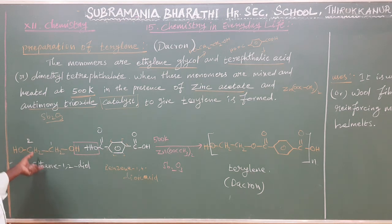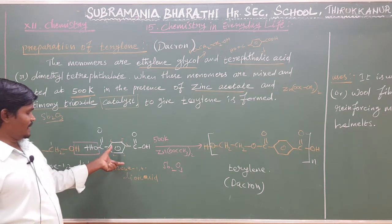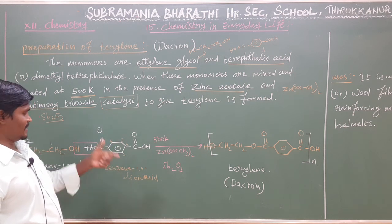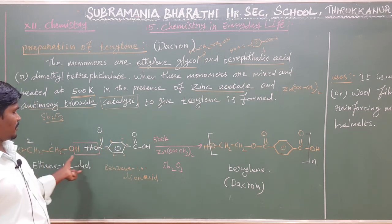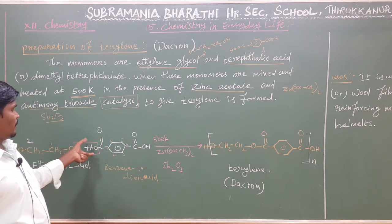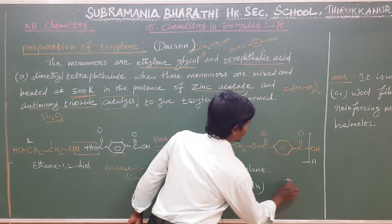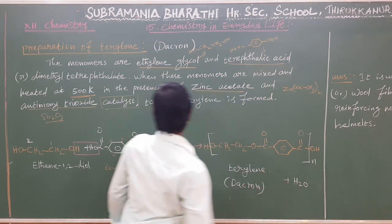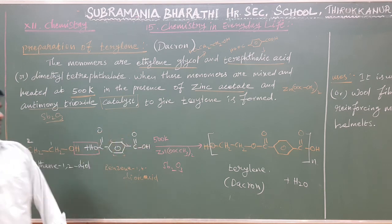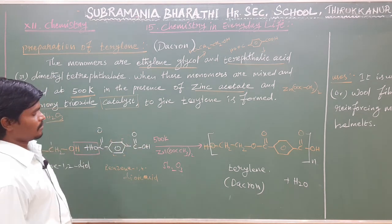Let us recap: we take ethylene glycol and terephthalic acid. The OH groups react and water is eliminated. The condensation reaction repeats and we become a polymer — Terylene.